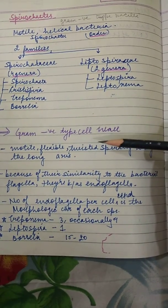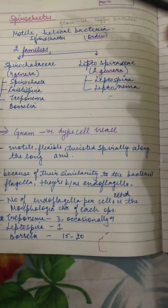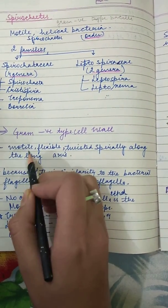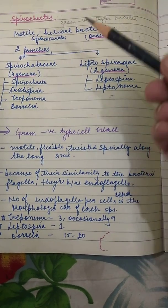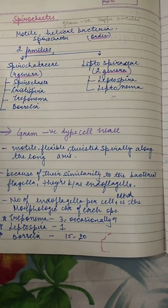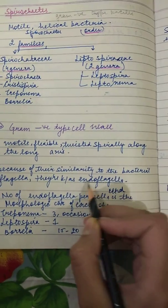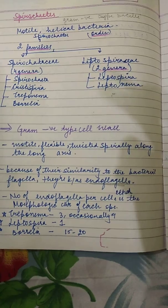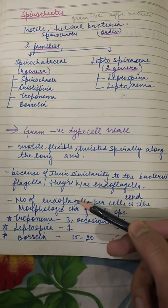As mentioned, they have a gram-negative type cell wall. They are motile, flexible, and twisted spirally along the long axis. A key feature of spirochetes is that they are motile, and their motility structure is similar to flagella — so they are also known as endoflagella.